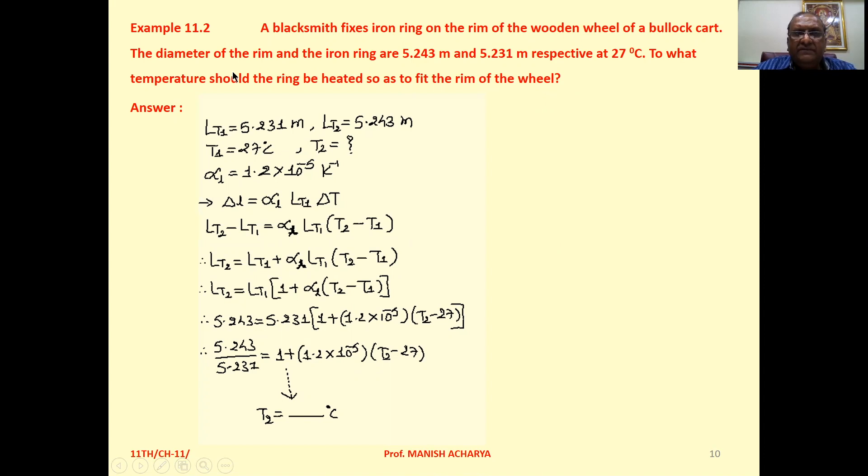See here, the diameter of the rim is 5.243 and the iron ring is 5.231. Now suppose we want to fix this particular iron ring on this particular wheel. Then we have to increase the diameter of this ring up to the diameter of the wheel.